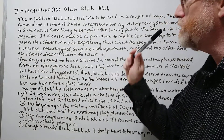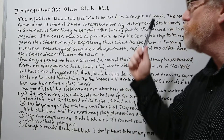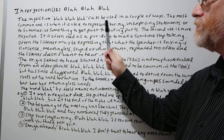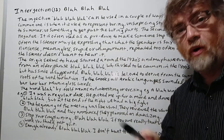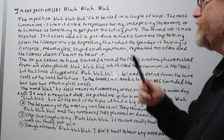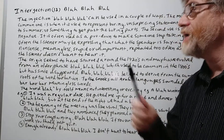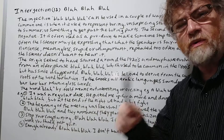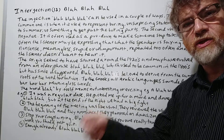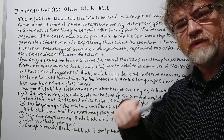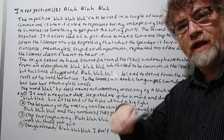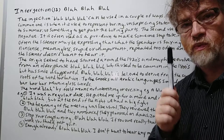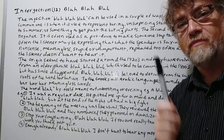The interjection 'blah blah blah' can be used in a couple of ways. The most common one is when it is used to represent boring or unsurprising statements, or to summarize something to get past the boring part. A lot of times when we're telling a story and we want to skip the boring details, we say 'blah blah blah' and jump right to the end.